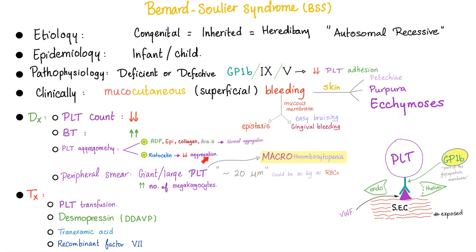We have decreased aggregation with ristocetin. Peripheral smear will give us giant platelets — so these platelets are low in number but big in size; we call this macrothrombocytopenia. Treatment includes platelet transfusion, desmopressin, tranexamic acid, or recombinant factor 7.